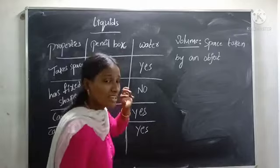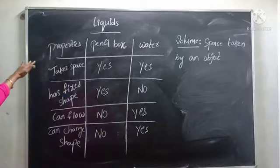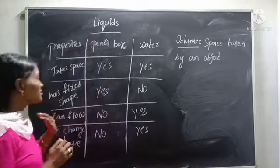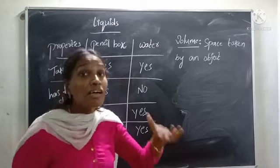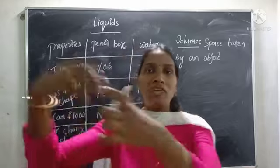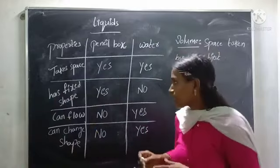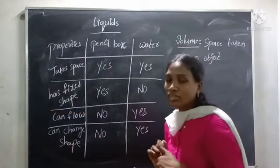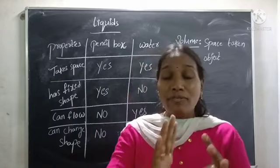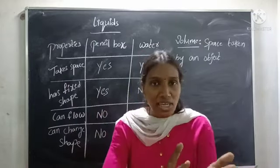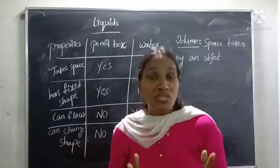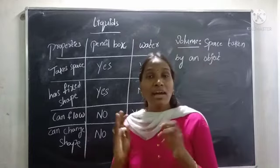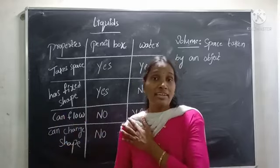The water is a liquid. How can we say that water is a liquid? Water takes up some space — when I pour it into a bottle, it takes the space inside the bottle. Water does not have a fixed shape. Water can flow when poured from one bottle into another, and it takes the shape of the other container. But one thing to observe: when I pour the water from one bottle into another, it can change its shape, but the volume is fixed. The volume remains fixed, but they can change their shape and take up space.